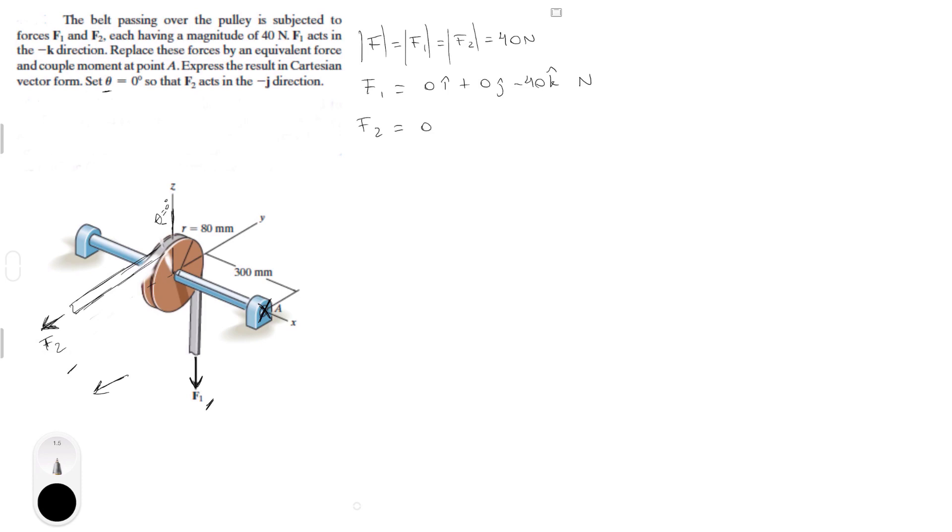F2 is zero on the i minus 40 in the j plus zero on the k, also in Newtons, because it's going straight in the negative y direction, which is negative j. So the sum of the forces, which is the resultant force, equivalent resultant force, is minus 40 j minus 40 k. So that's the resultant force.